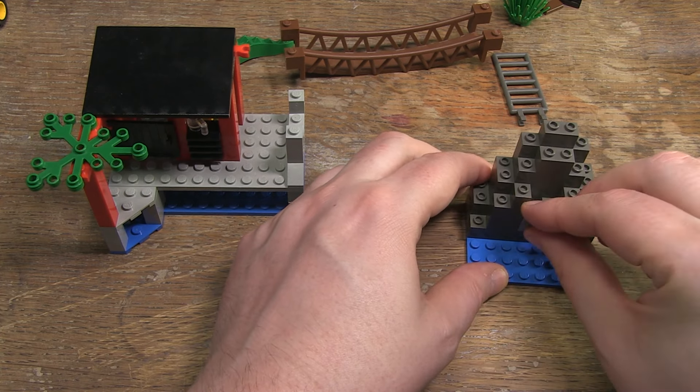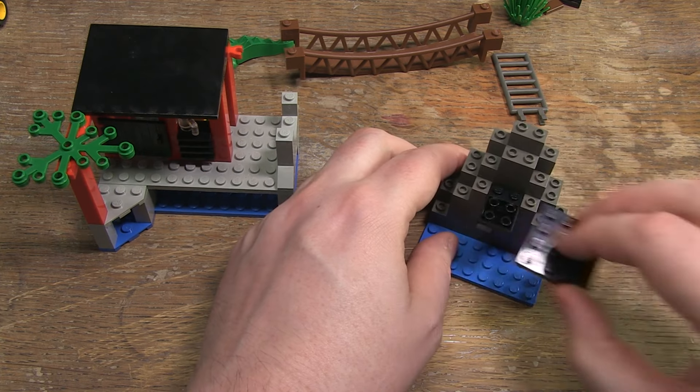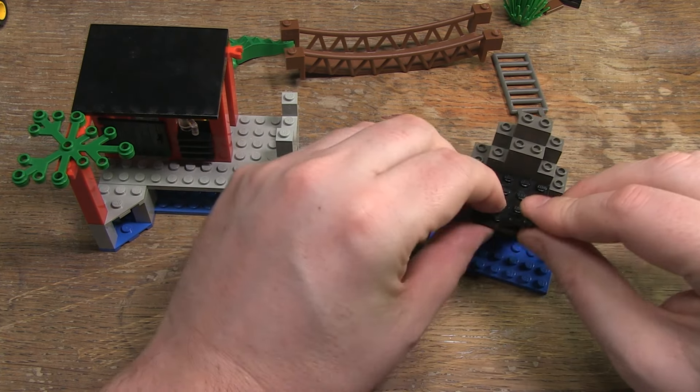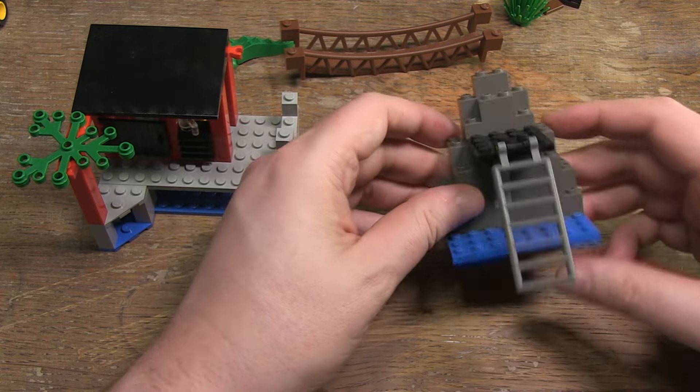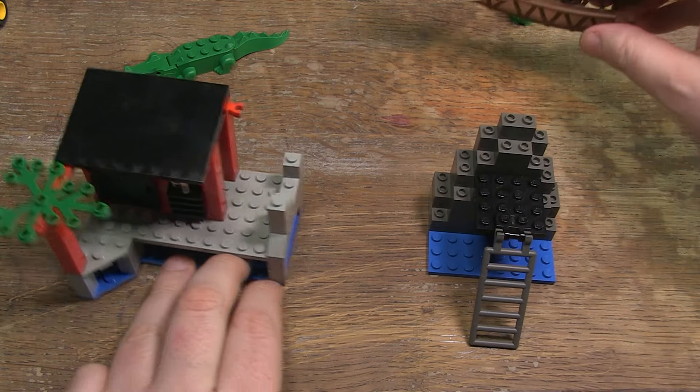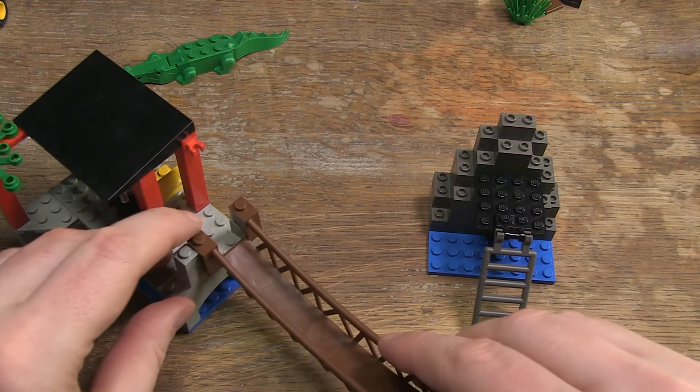You still have to build some basic bricks on the rock in a different color of gray. And also a black plate and brick. And a gray ladder.